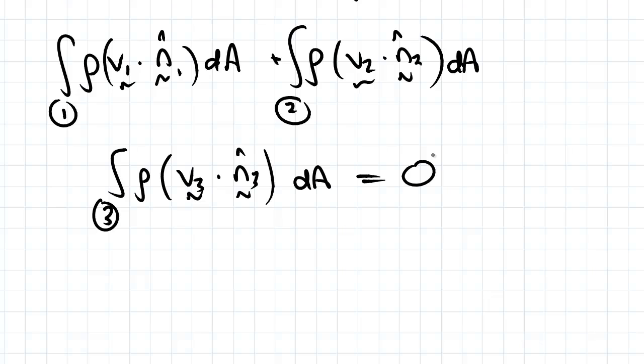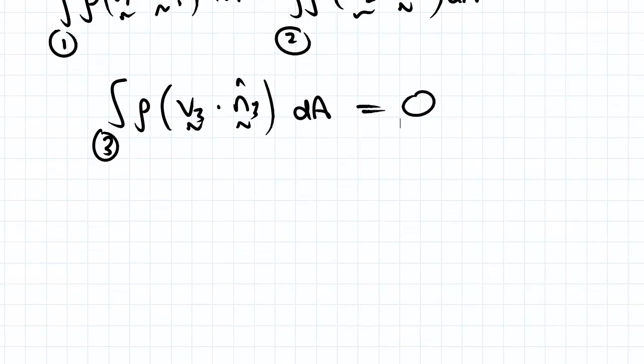So we know that an inflow will lead to v dot n equaling negative v, and an outflow will lead to v dot n equaling positive v. So we integrate that to equal negative rho v1 dA1 plus rho v2 dA2 plus rho v3 dA3 equal to 0.